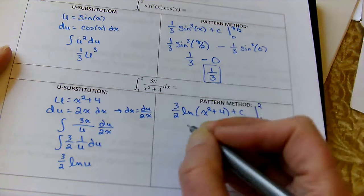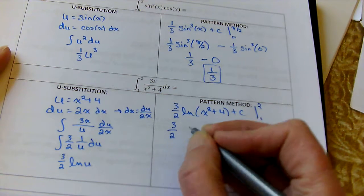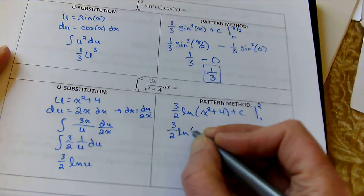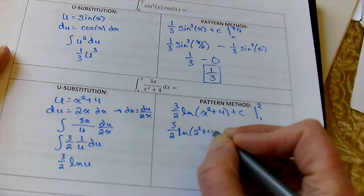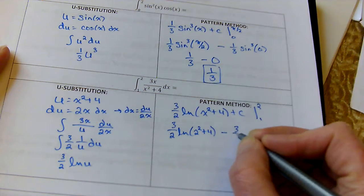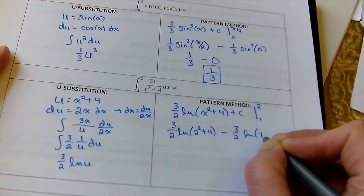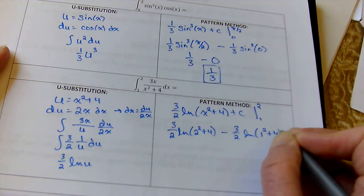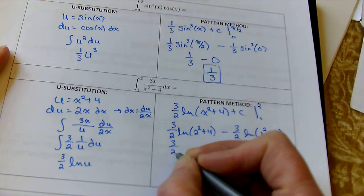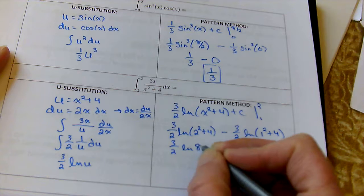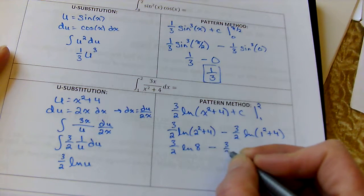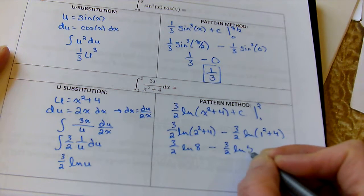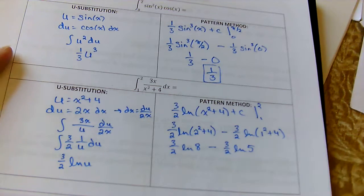Evaluate it from 1 to 2. So, if I plug in 2 first. Natural log of 2 squared plus 4 minus 3 halves, natural log of 1 squared plus 4. 3 halves, natural log of 8 minus 3 halves, natural log of 5. So, this is a safe stop.